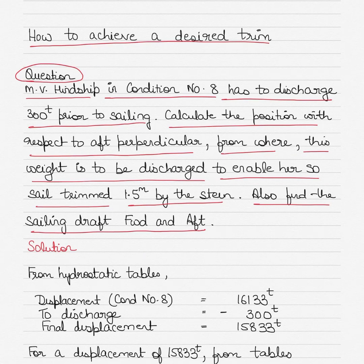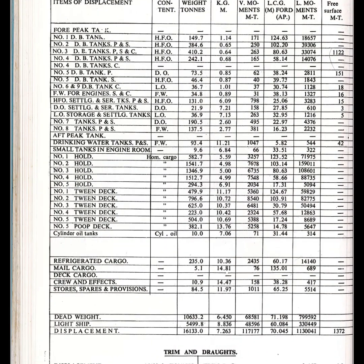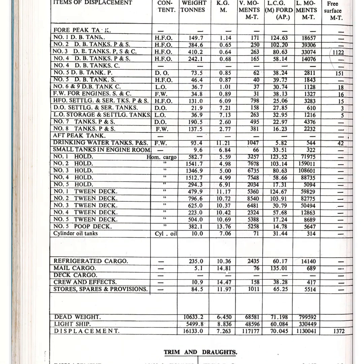You have to go into the MV Hinship trim and stability particulars to get the values. From the hydrostatic tables, you will get the initial displacement of the vessel in condition number 8. The displacement is given as 16133 tons. While you are on this page, you should also get the LCG, or longitudinal center of gravity, which is 70.045. Please make a note of it — this is the initial displacement and initial longitudinal center of gravity.